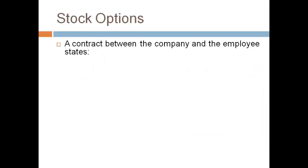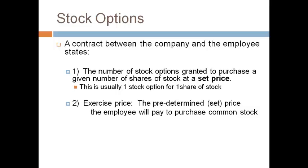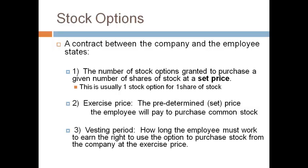A stock option is an agreement between an employee and the company they work for that provides benefit to the employee if the company's stock price increases. The employee earns the right over time to purchase the common stock at a price hopefully lower than the fair market value of the stock. This price is referred to as the exercise price. One option plus the cash is traded for one share of common stock after the options are vested. Vested means the employee has earned the right to exercise the option.